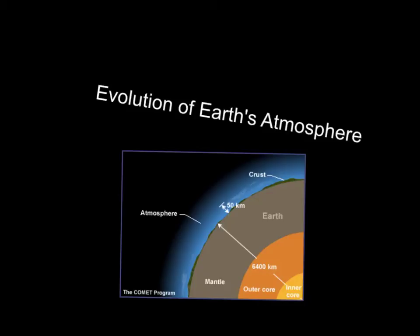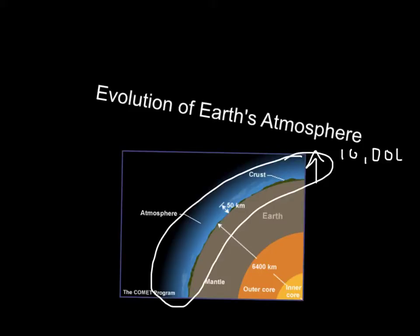For this unit, we'll be studying Earth's atmosphere and also the evolution of Earth's atmosphere. So the atmosphere is actually described as this little bubble of air that surrounds the Earth. It extends roughly 10,000 kilometers away from our surface, and then it just fades into outer space.